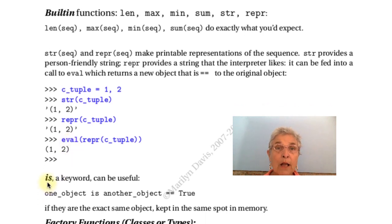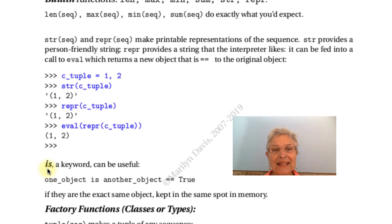IS is a good keyword. In another language, it might be called the identity. One object is another object. And it might be represented by three equals signs in a row. But it's going to give you true if they really are the same object. Same place in memory. So they really are the same object with two different identifiers.